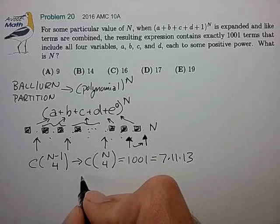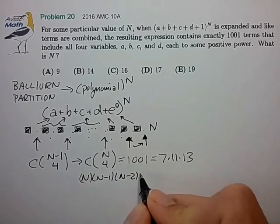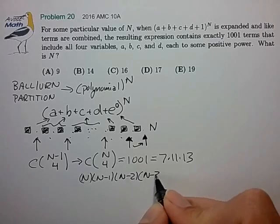And if we expand what C(n, 4) is, we find now that n times n minus 1, n minus 2, n minus 3 over 4 factorial.